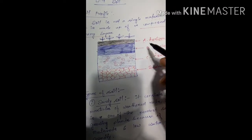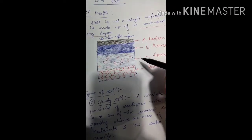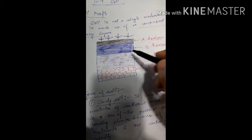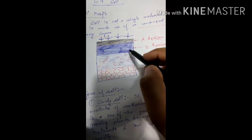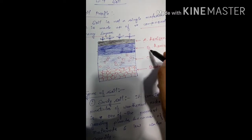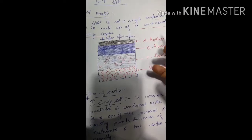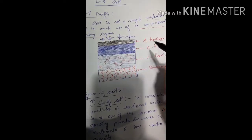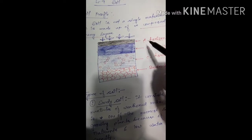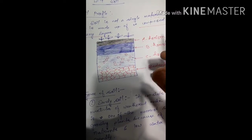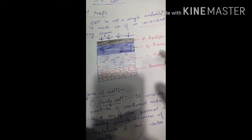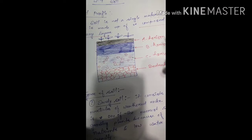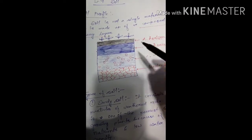B horizon is just below the topsoil or A horizon, and above C horizon. In B horizon, we find more compact soil. The particles of the soil in B horizon are more tightly packed compared to A horizon. In A horizon, soils are loosely arranged, whereas in B horizon they are more tightly packed and very dense.